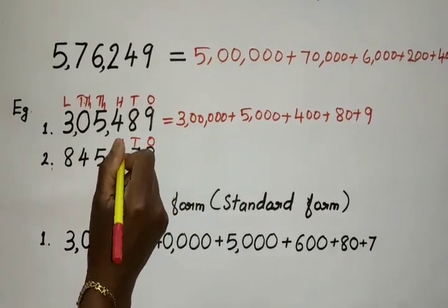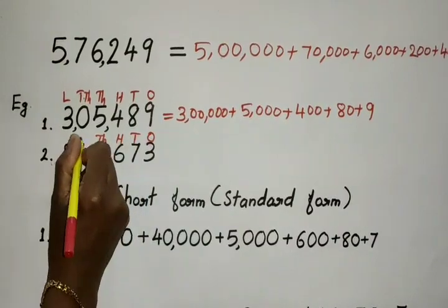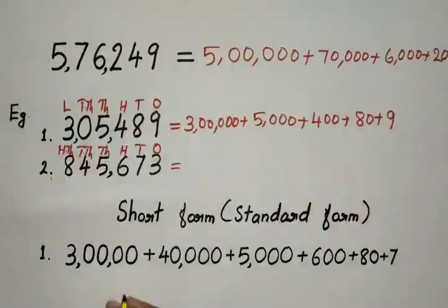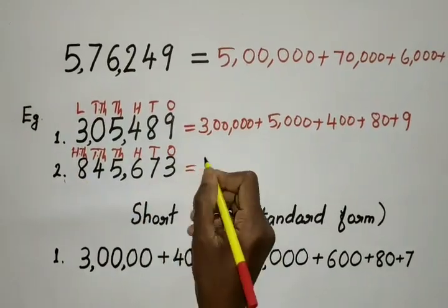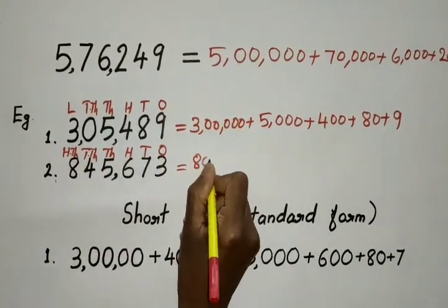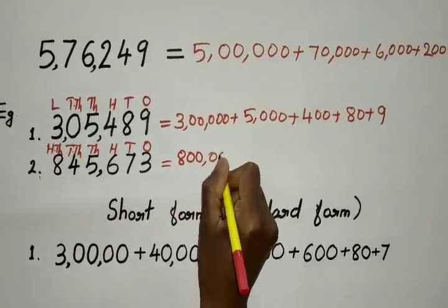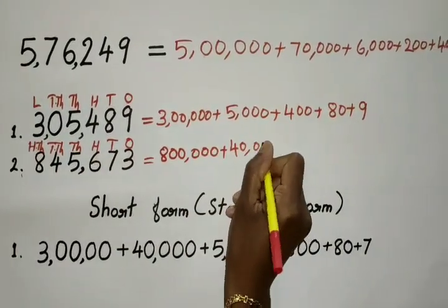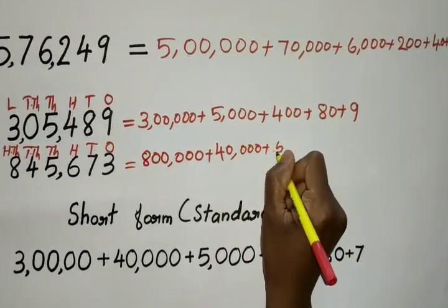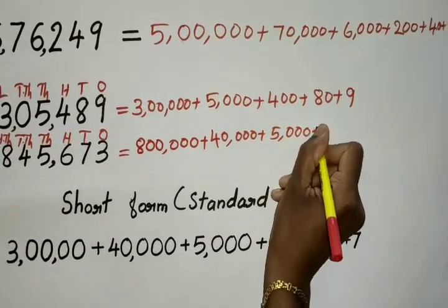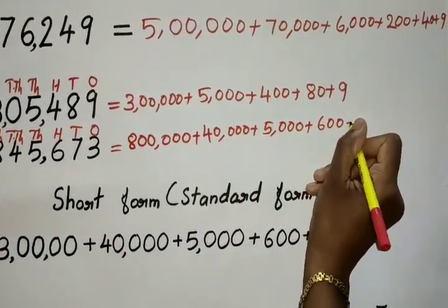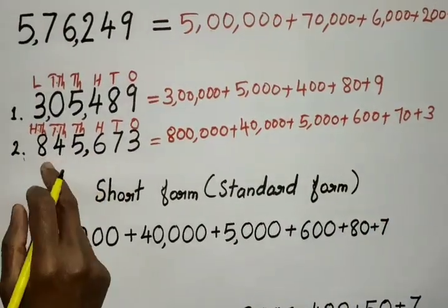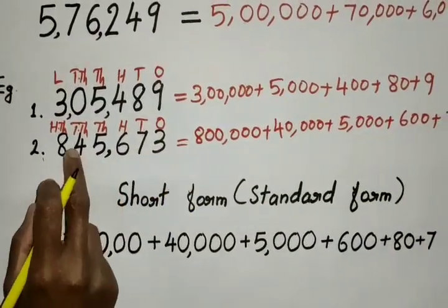1's, 10's, 100's, 1000's, 10,000's, and 100,000's. That is the place value of 8: 800,000, plus 40,000, plus 5,000, plus 600, plus 70, plus 3.